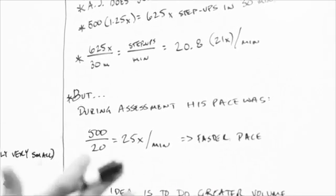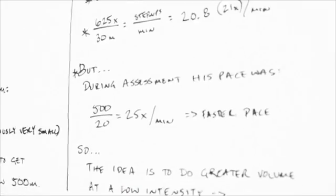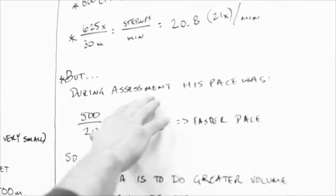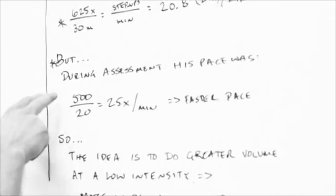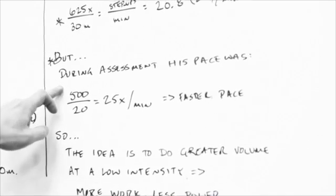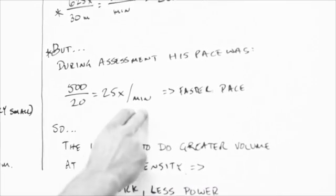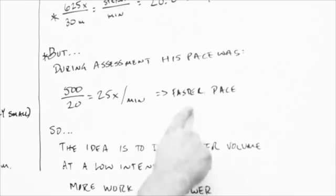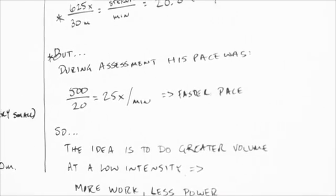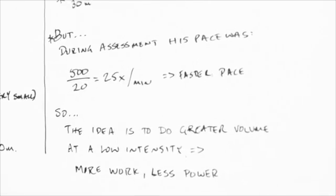Now let's look at how this is easier. During AJ's assessment, his pace was 500 divided by 20 because 500 step-ups in 20 minutes equals 25 per minute. So he was at a faster pace than what he has to do today. So he has to slow his pace down today.